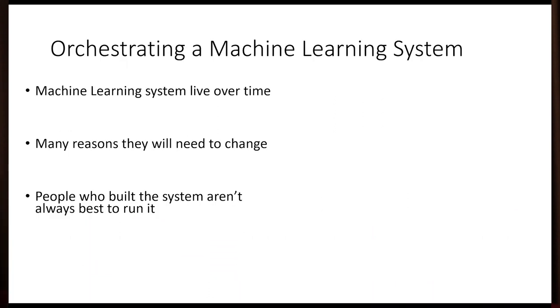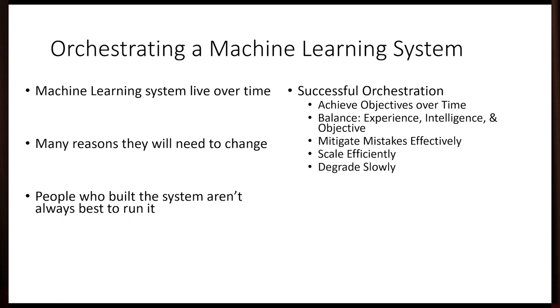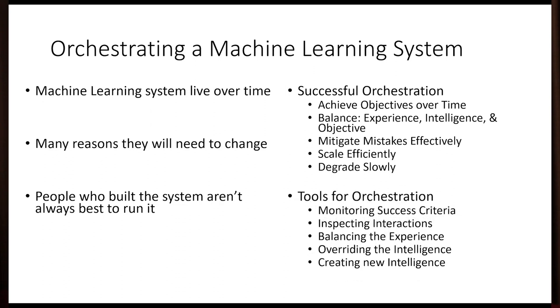Machine learning systems live over a long period of time. You probably are using machine learning because you're dealing with a hard problem or an open-ended problem or a time-changing problem. And that means that you're not just going to deploy it and walk away. So orchestrating is about how do you build a system that it's easy to run over time so that the quality of the system stays high day after day after day and doesn't start degrading the moment you ship it. Successful orchestration needs to achieve the objective to balance the forcefulness of the experience, the frequency of the experience, and the quality of the intelligence. Mitigate mistakes, scale efficiently, degrade slowly, and you might want to invest in building tools to help the people who are doing orchestration.